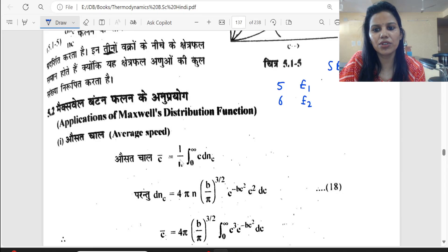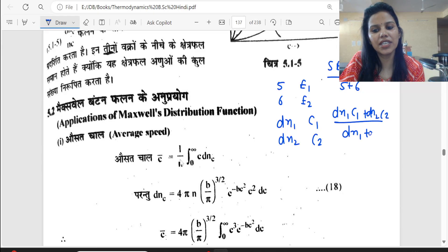Now if dN1 particles have speed C1, dN2 particles have speed C2, then take the average. So you will do dN1·C1 plus dN2·C2 upon the number dN1 plus dN2.